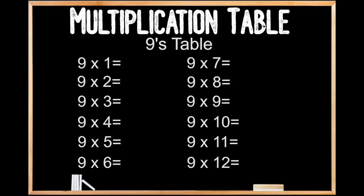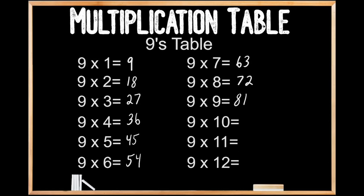9's table. 9 x 1 is 9. 9 x 2 is 18. 9 x 3 is 27. 9 x 4 is 36. 9 x 5 is 45. 9 x 6 is 54. 9 x 7 is 63. 9 x 8 is 72. 9 x 9 is 81. 9 x 10 is 90. 9 x 11 is 99. And 9 x 12 is 108.